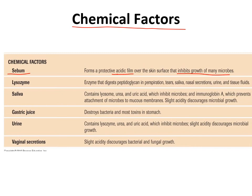Another chemical factor is lysozyme, produced in many different types of secretions. Its purpose is to break down peptidoglycan, which is found in bacterial cell walls. The purpose of the bacterial cell wall is to protect against osmotic lysis. If the peptidoglycan is broken down when bacteria enter the human body — and bacteria tend to be hypertonic compared to the human body — then those bacteria will lyse by osmotic lysis. Saliva is technically a chemical factor because it contains lysozyme.